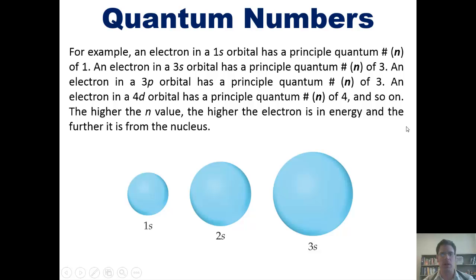An electron in a 3s orbital has a principal quantum number of 3. An electron in a 3p orbital has a principal quantum number of 3. An electron in a 4d orbital has a principal quantum number of 4, and so on.